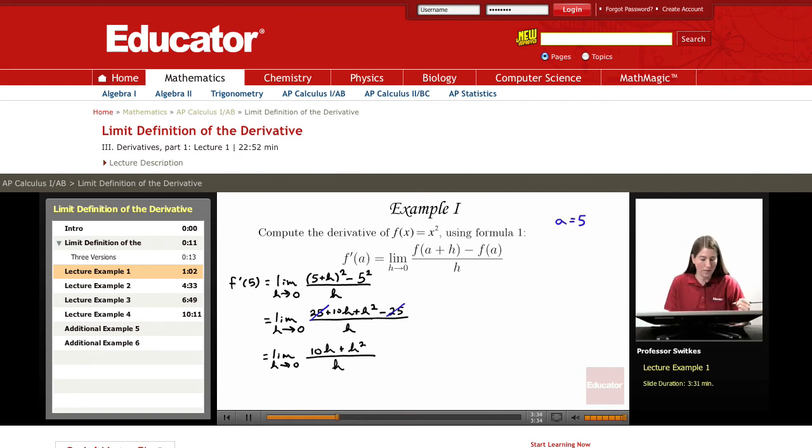Let's continue simplifying this fraction. In the numerator, each term has a factor of h, so we can divide through by h. We have the limit as h approaches 0 of 10 + h. As h approaches 0, this gives us 10. So for f(x) = x², f'(5) = 10. That's our final result for this first example.